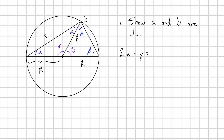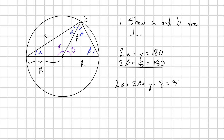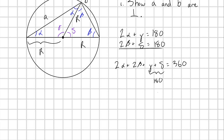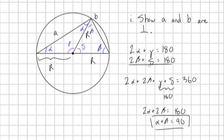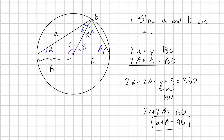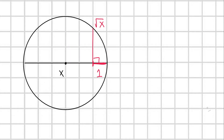For each triangle: two alpha plus gamma equals 180 degrees, and two beta plus delta equals 180 degrees. Adding these together: two alpha plus two beta plus gamma plus delta equals 360 degrees. But gamma plus delta is clearly 180 degrees, so two alpha plus two beta equals 180 degrees, or just alpha plus beta equals 90 degrees. And that angle alpha plus beta is this angle right here — so we have a right angle in our triangle.